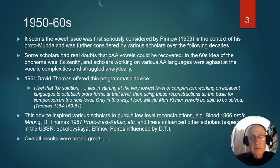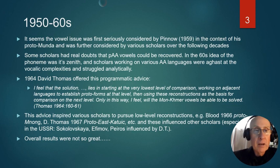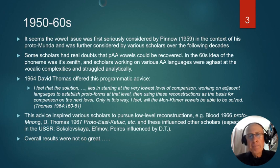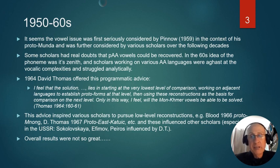In 1964, David Thomas offered this programmatic advice. He wrote: 'I feel that the solution lies in starting at the very lowest level of comparison, working on adjacent languages to establish proto-forms at that level, then using these reconstructions as the basis for comparison at the next level. Only in this way will the Mon-Khmer vowels be able to be solved.' This advice inspired various scholars to pursue low-level reconstructions — for example, Blood's Proto-Mnong, Dot Thomas's Proto-East Katuic, and others.